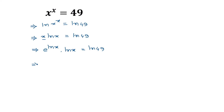Taking the Lambert W function of both sides, we apply W to ln of x times e to the power ln of x on the left side, and W of ln of 49 on the right side.